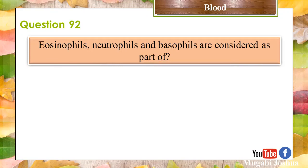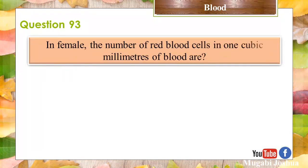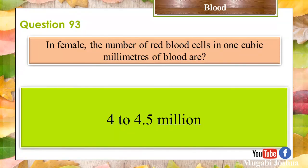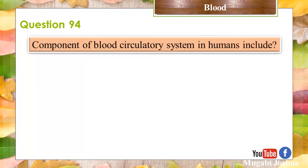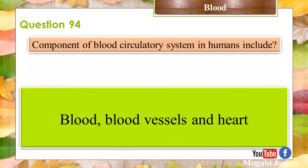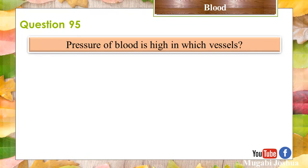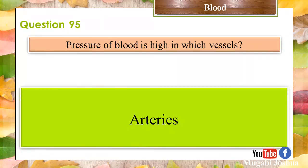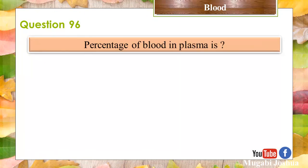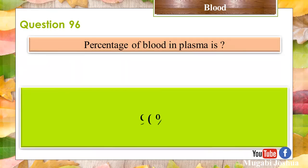Question 92: Eosinophil, neutrophil, and basophil are considered as part of? Granulocytes. Question 93: In females, the number of red blood cells in one cubic millimeter of blood are 4 to 4.5 million. Question 94: Components of the blood circulatory system in humans include blood, blood vessels, and heart. Question 95: Pressure of blood is high in which vessels? Arteries. Question 96: Percentage of water in plasma is? 90%.